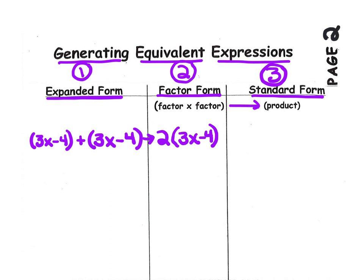Our first factor is 2 and our second factor is the quantity 3x minus 4. Now that it's written as a multiplication problem, we're going to actually multiply it to come up with a product, which of course is known as standard form. We're going to distribute this 2 to each term and multiply, which in this case will double each term. 2 times 3x gives us 6x, and 2 times negative 4 gives us negative 8.